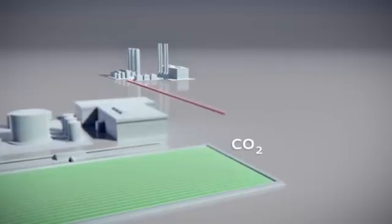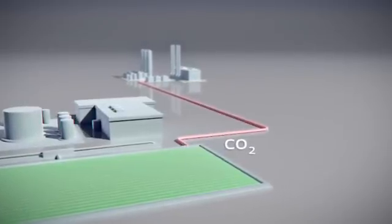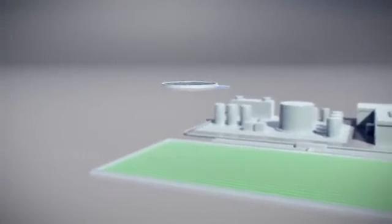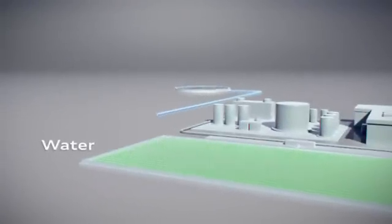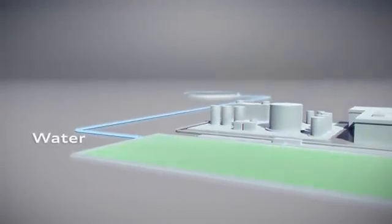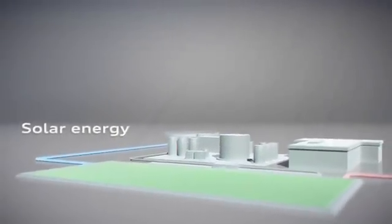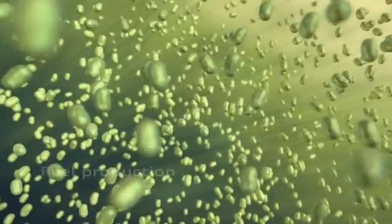The process utilizes CO2 which can be obtained from an industrial or biogas plant. Another component used for the fuel is salt water, brackish water, or waste water. The Sun provides the process energy that the organisms need to produce the fuel.